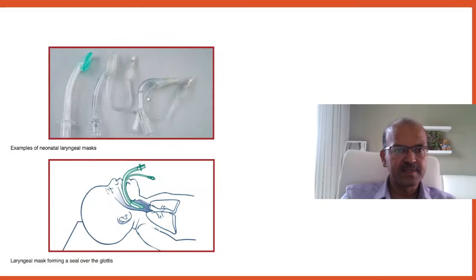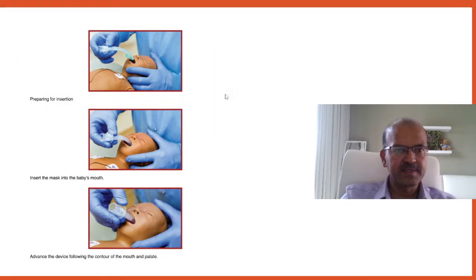The laryngeal mask airway (LMA) is used if the baby cannot be successfully ventilated with a face mask and intubation is unfeasible. Size 1 is standard; size 0 can be used for babies up to 1 kg (some report use up to 1.5 kg). The LMA sits over the laryngeal opening — this reduces gastric distension, improves ventilation effectiveness, and allows surfactant delivery via a feeding tube through a separate port (SALSA technique). Unlike in older patients, insertion in neonates follows the natural direction; push until resistance, then inflate the cuff if applicable, and secure.